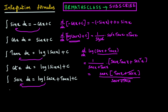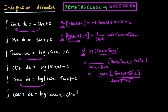Now we will see the sixth formula: integral of cosecant x dx. Sin x, cos x, tan x, cot x, and secant x are done. The remaining one is cosecant x. Integral of cosecant x dx is log mod of cosecant x minus cot x plus c. The same reason applies — if you differentiate log modulus of cosecant x minus cot x plus c, you will get cosecant x only.